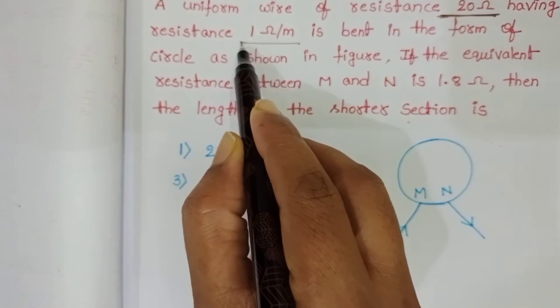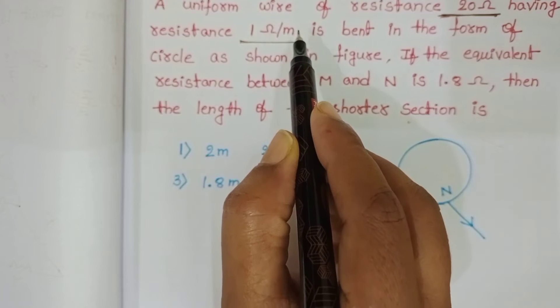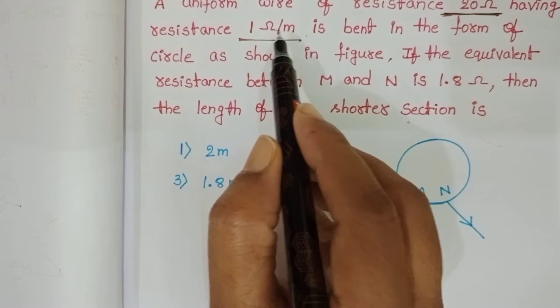1 ohm per meter means each meter of wire behaves like a 1 ohm resistor.